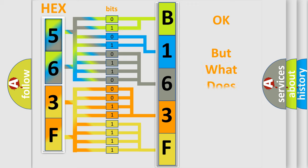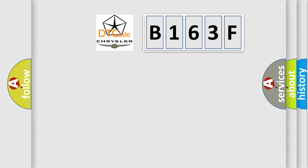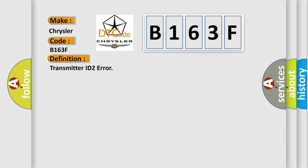We now know in what way the diagnostic tool translates the received information into a more comprehensible format. The number itself does not make sense if we cannot assign information about what it actually expresses. So, what does the diagnostic trouble code B163F interpret specifically? Chrysler — car manufacturers. The basic definition is: Transmitter ID2 error.